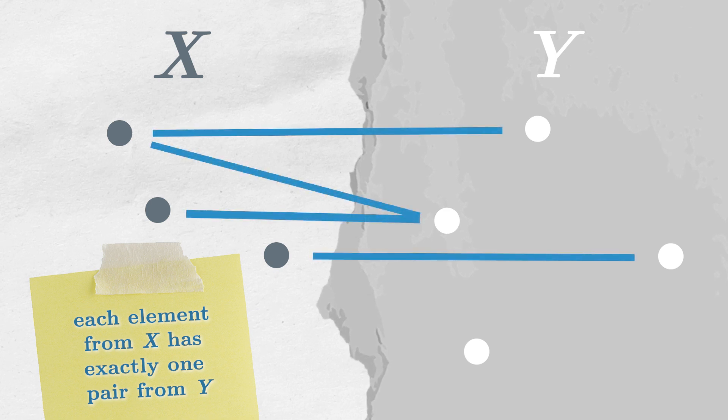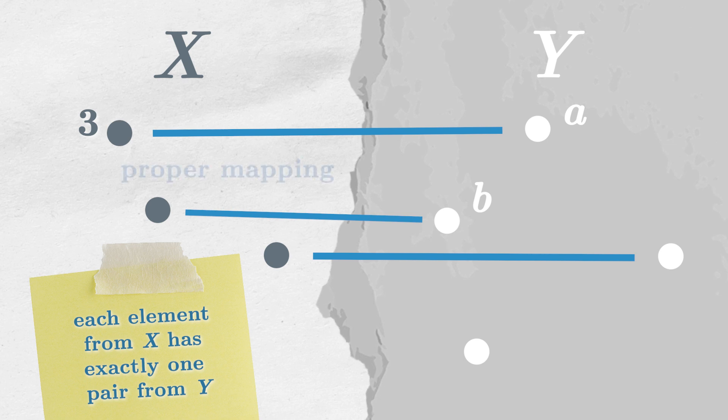For example, this is not a valid mapping, because 3 from x is paired both with a and with b. If we remove one of these pairings, the whole thing becomes a proper mapping.